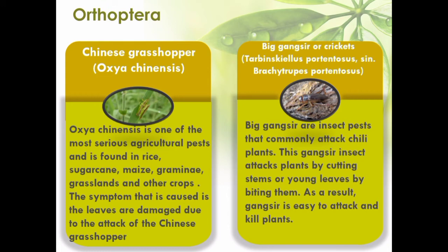Orang-orang attacks plants by cutting them at the base of the stem and damaging the roots. Chinese grasshopper, Oxya chinensis, is one of the most serious agricultural pests, found in rice, sugarcane, maize, grass, and other crops. The damage caused is that the leaves are damaged due to the attack. Brachytrupes portentosus, or crickets, are insect pests that commonly attack chili plants by cutting stems, causing plants to be easily killed.